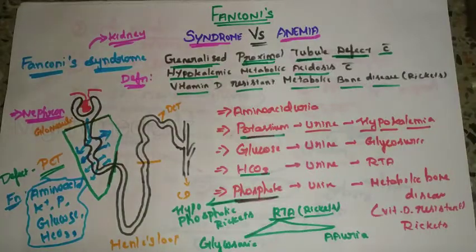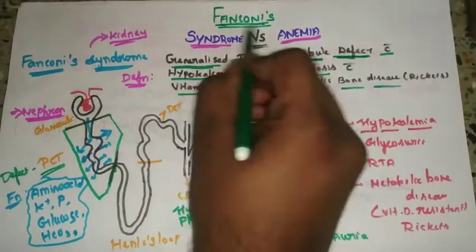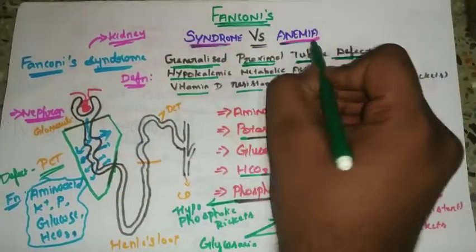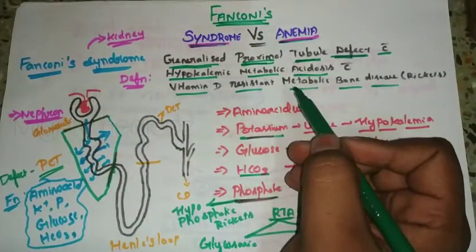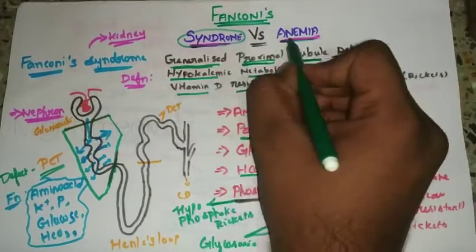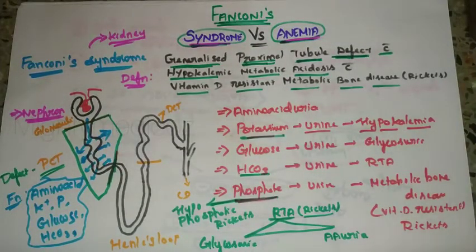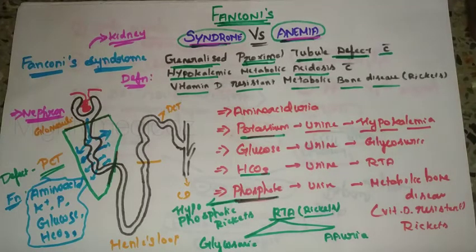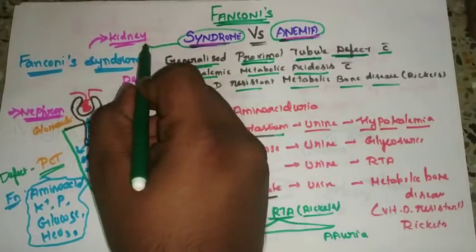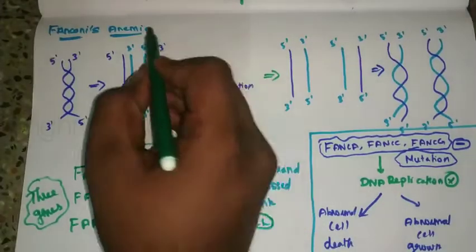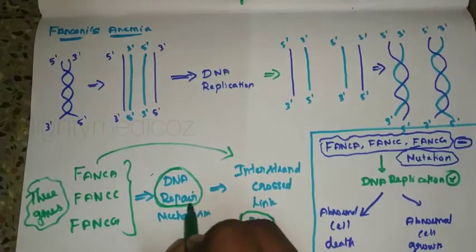Today's topic of discussion is all about Fanconi's Syndrome and Fanconi's Anemia. Fanconi's Syndrome is associated with kidney diseases, whereas Fanconi's Anemia is associated with the DNA repair mechanism.